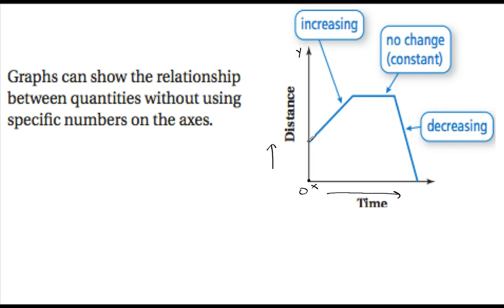When we look at this graph, we're starting at some distance. In the first section, the graph is increasing. In the next section, there's no change — it's staying constant, it's flat. And then lastly, the graph is decreasing. So you can easily just look at a graph and tell what it's doing without any numerical values.